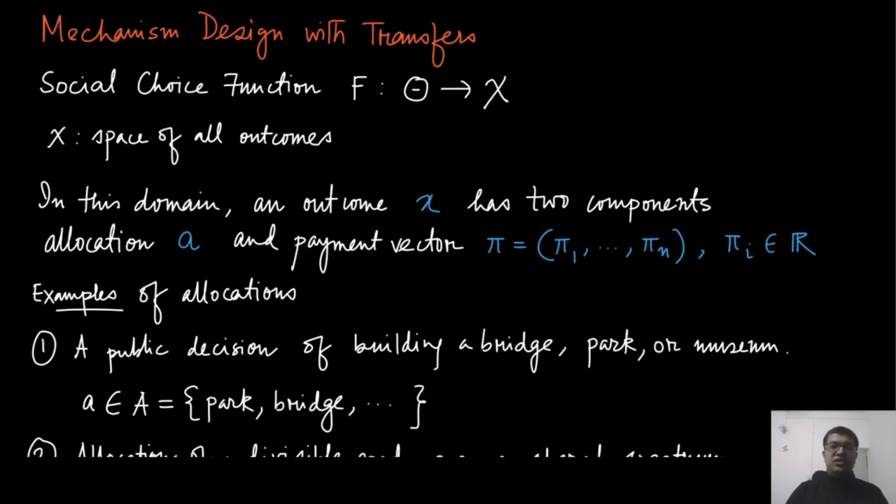Having discussed the domain restrictions of single peaked and task allocation domains, we are now going to discuss the third domain restriction which is mechanism design with transfers. For the rest of the course, we are going to discuss only this domain which is presumably much more interesting and has lots of applications in different domains.